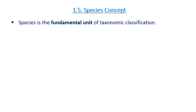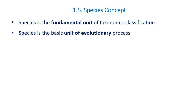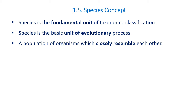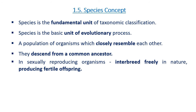Now about the species concept. The characteristic features of a species: species is considered as the fundamental unit of taxonomic classification and the basic unit of the evolutionary process. A population of organisms which closely resemble each other and descend from a common ancestor.